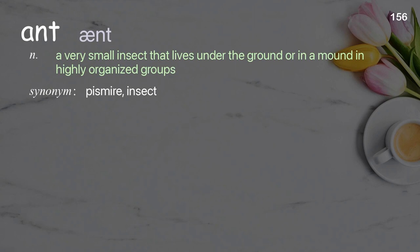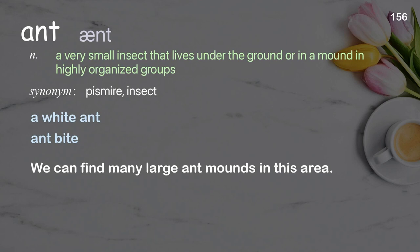Ant: a very small insect that lives under the ground or in a mound in highly organized groups. Examples: a white ant; ant bite. We can find many large ant mounds in this area.